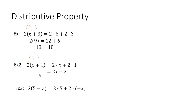Another example: we have two and then parentheses five minus x. What you have to do is two times five, plus two times negative x — I know it says minus x but that's the same as negative x. Simplifying the right-hand side: two times five is 10, and two times negative x is negative 2x. So that's how you simplify that expression using the distributive property.